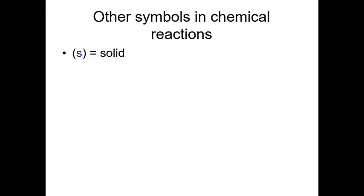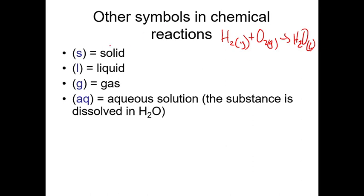Other symbols in chemical reactions include state symbols. For example, using the water reaction: H₂ (g) + O₂ (g) → H₂O (l). The 's' means the substance is a solid, 'l' means liquid, 'g' stands for gas, and 'aq' stands for aqueous solution — a substance dissolved in water. So here, the reactants are two gases — hydrogen gas and oxygen gas — and they form water in liquid form.